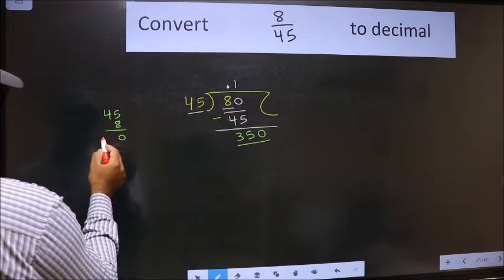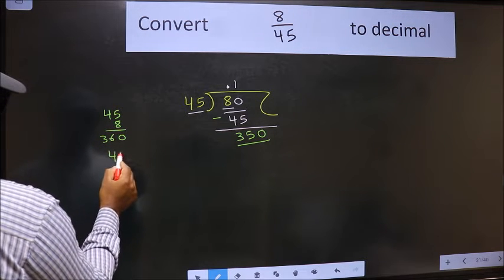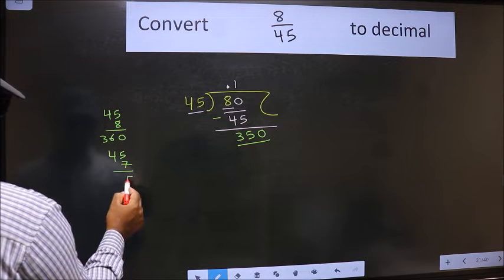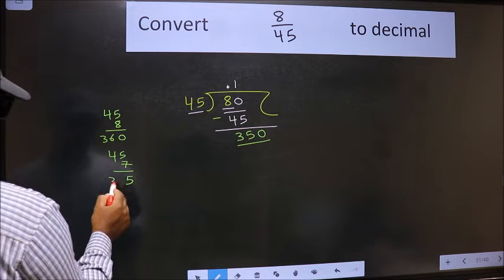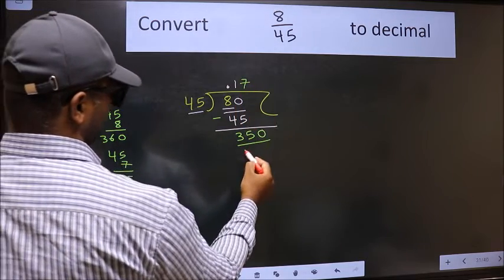8 times 45: 8, 5, 40, 8, 4, 32... 360 is exceeding. So 7s. 7, 5, 35, 7, 4, 28, 3, 1, 5. Yeah, 7s. 315.